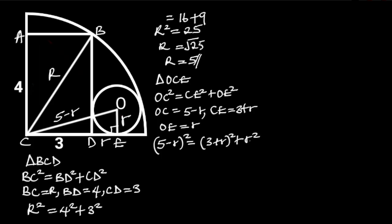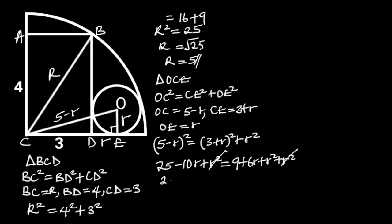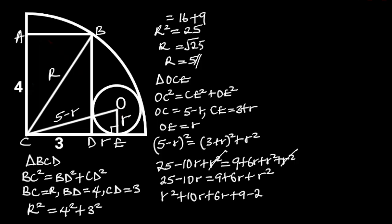Substituting these values in the formula will give us (5 minus r) squared is equal to (3 plus r) squared plus r squared. On the left side, expanding (5 minus r) squared gives us 25 minus 10r plus r squared. On the right side, expanding (3 plus r) squared gives us 9 plus 6r plus r squared. So we have 25 minus 10r plus r squared is equal to 9 plus 6r plus r squared plus r squared. The r squared terms cancel, and we are left with 25 minus 10r is equal to 9 plus 6r plus r squared.